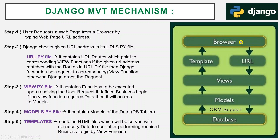The browser requests a web page, Django checks the page address, and if it matches with the URL file, Django allows that request to pass to the corresponding view function. This view layer defines the business logic — all the processing logic is defined here. Different view functions are defined for different requests according to the requirement.